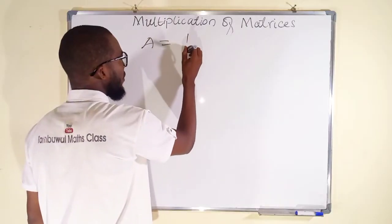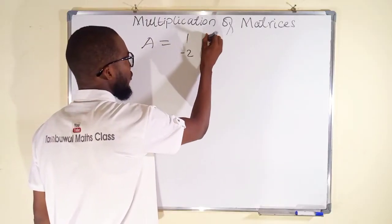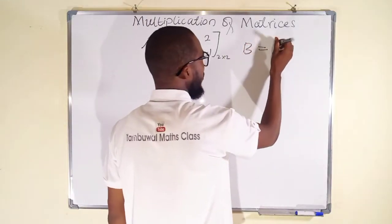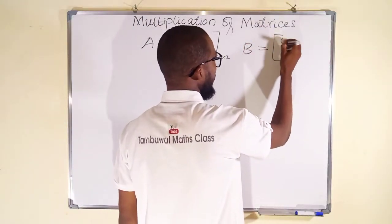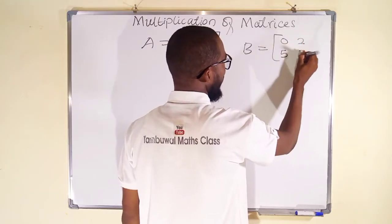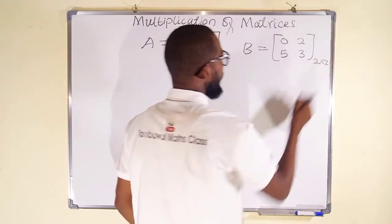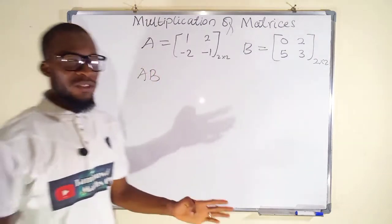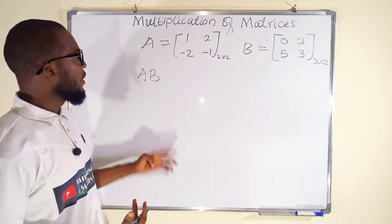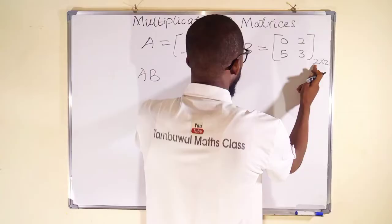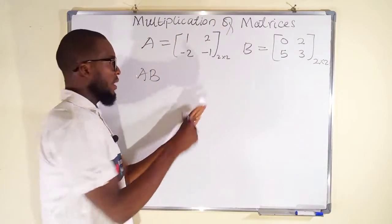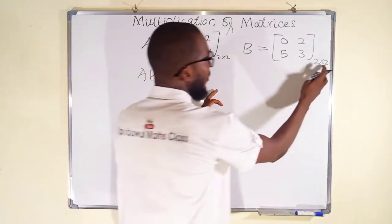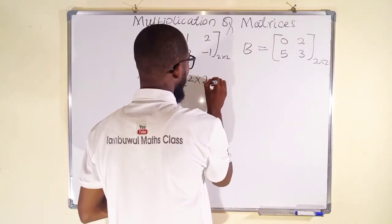For the next example, we have matrix A as [1, -2; 2, -1], which is a 2 by 2 matrix, and another matrix B as [0, 2; 5, 3], also 2 by 2. We want to multiply A and B together. First, check compatibility: the number of columns in A equals the number of rows in B, so they match. The result will be of dimension 2 by 2.